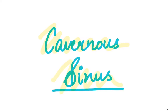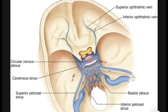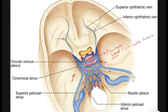This cavernous sinus is situated in the middle cranial fossa along the body of the sphenoid and sella turcica, which is where the pituitary gland rests. So the pituitary gland is in the sella turcica.